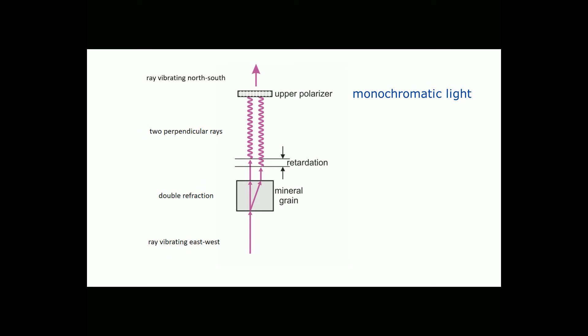But when the two rays get to the upper polarizer, some optic magic takes place. The upper polarizer lets their north-south components pass through while blocking their east-west components. The filter absorbs the east-west vibrations of the light. And above the upper filter, the waves are now vibrating in the same plane and so they can interfere.